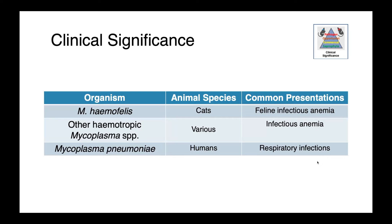Then we have our hemotrophic mycoplasma species. Mycoplasma haemofelis is perhaps the best known in cats, causing feline infectious anemia. But there are other species of hemotrophic mycoplasma that can affect many different animals — Mycoplasma haemocanis, haemolama, etc. — all united by their association with infectious anemia. And finally, for completeness, Mycoplasma pneumoniae in people — not a hemotrophic species, but it causes respiratory infections in humans.